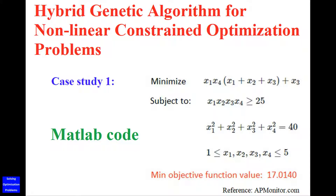Hello everyone. I have successfully developed a powerful hybrid genetic algorithm for non-linear constrained optimization problems. This genetic algorithm not only has a mechanism to restart its search process if it gets stuck in local optima, but also has a local search algorithm. Therefore, this hybrid genetic algorithm is very robust for non-linear constrained global optimization problems.